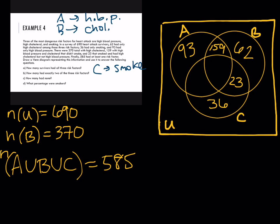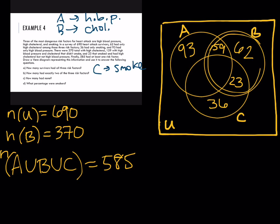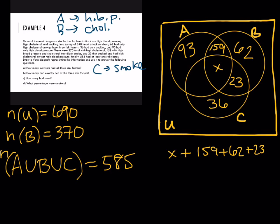We only have three regions left. Looking at circle B, we have one missing region and we know the total for set B is 370. This is like a little algebra problem — label that missing region X. The cardinalities of all four regions in circle B should add up to 370. Subtract the three known numbers from 370, and that gives us 126.